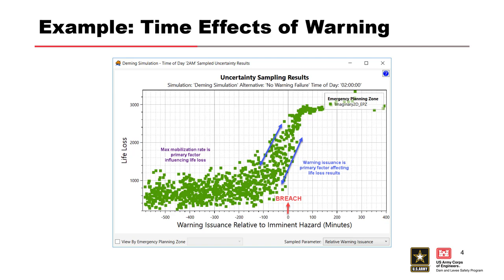Whereas if the population were further downstream, you wouldn't see as much of a slope or reaction in the density of these points — it would just be spread out and kind of flat. When we look out here, several hours before, max mobilization rate is the primary factor. You've heard a lot about that this week. Jason talked about it with Oroville — when you showed the Butte County and Sutter County examples, about 85% of people evacuated. So what that would tell me is this group clustered between a hundred and a thousand life loss is sampling around that 85%.